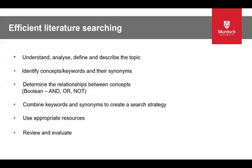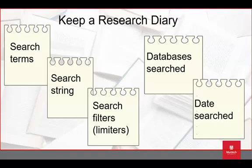These are the steps to have efficient literature searching. Firstly, you need to understand, analyze, define, and describe the topic. Then identify concepts, keywords, and their synonyms. Determine the relationships between the concepts — this is using Boolean operators: AND, OR, NOT. Combine the keywords and synonyms to create a strategy using appropriate resources, and then review and evaluate your results and steps. It is good practice to keep a research diary.